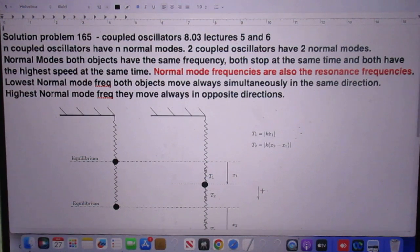Normal mode frequencies are also the resonance frequencies. So in this case we have two normal mode frequencies. One is the highest frequency, we call that omega plus. And the other is the lowest frequency, we call that omega minus.